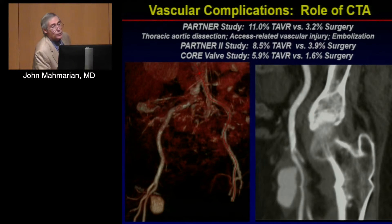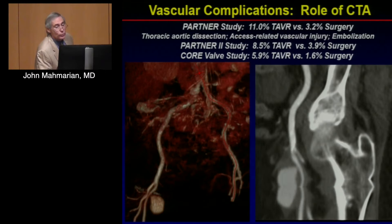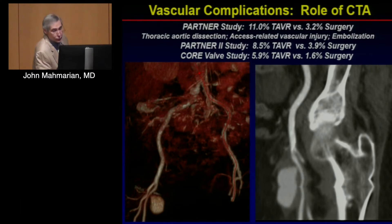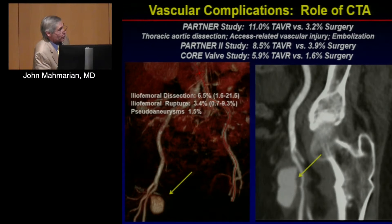We can also assess vascular complications. Access-related vascular injuries are associated with TAVR — in the PARTNER 1 study it was 11%, in PARTNER 2 it was 8.5%, and in the CoreValve study it was 5.9%. This is an example of a patient who developed a saccular pseudoaneurysm that was picked up on CT after device delivery.